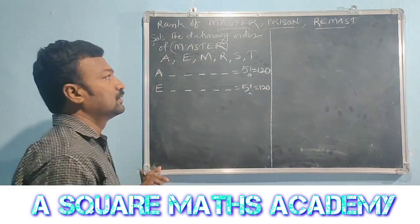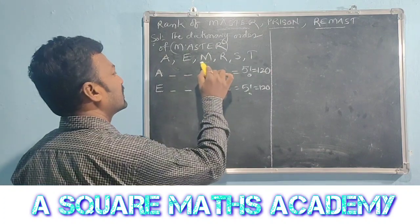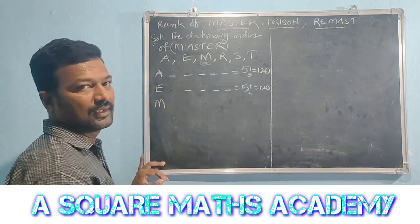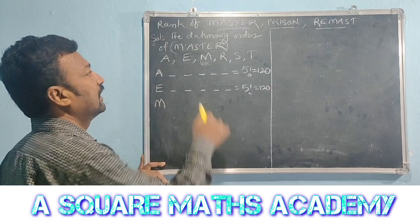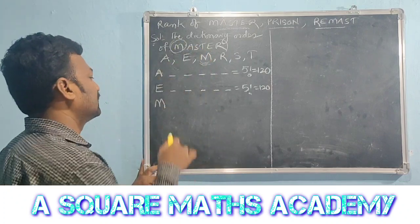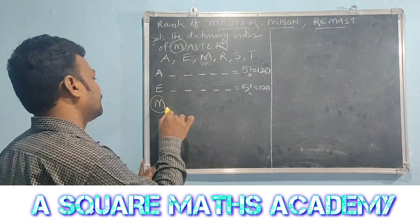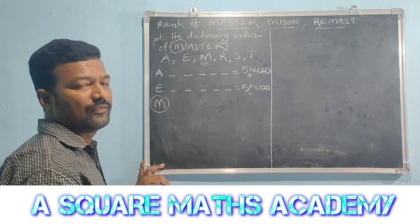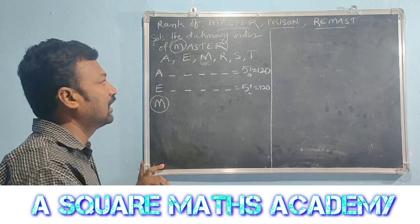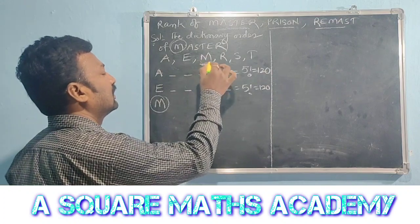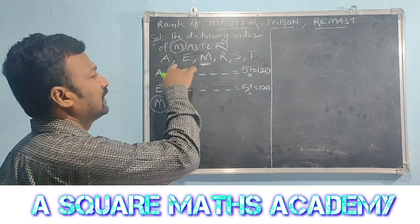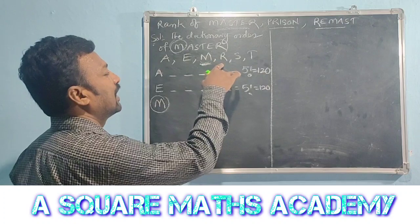Next, the letter M. The word MASTER starts with M. First place is filled with M. The second letter of MASTER is A. The remaining letters available are A, E, R, S, T.